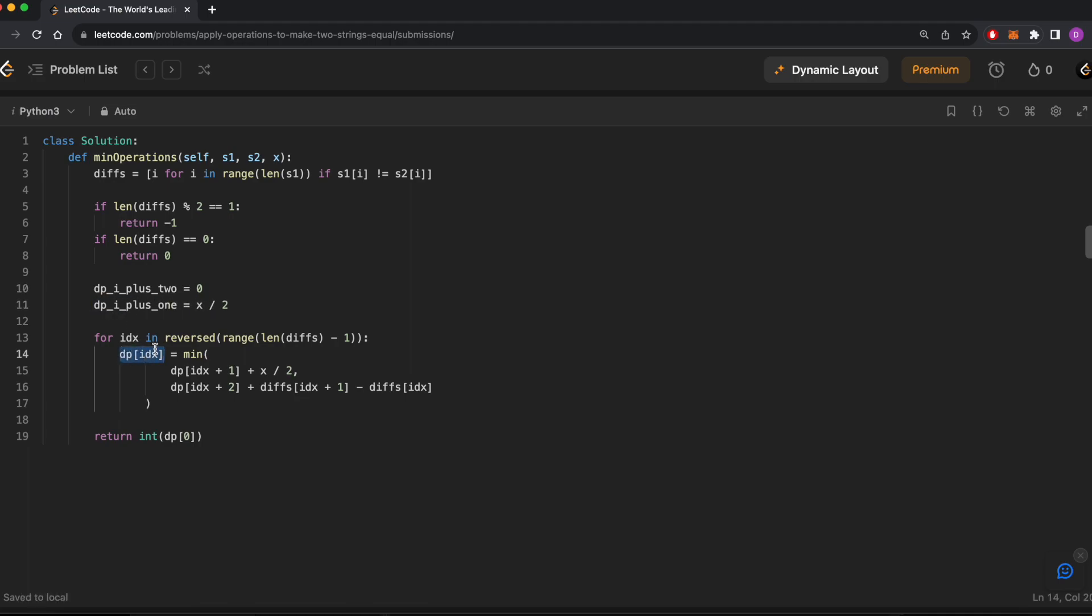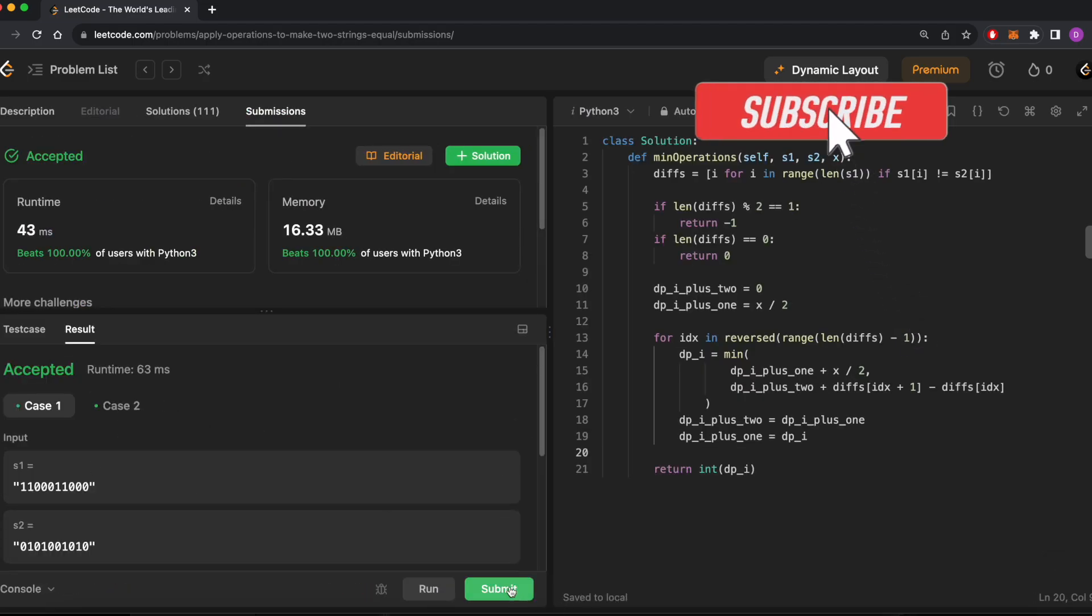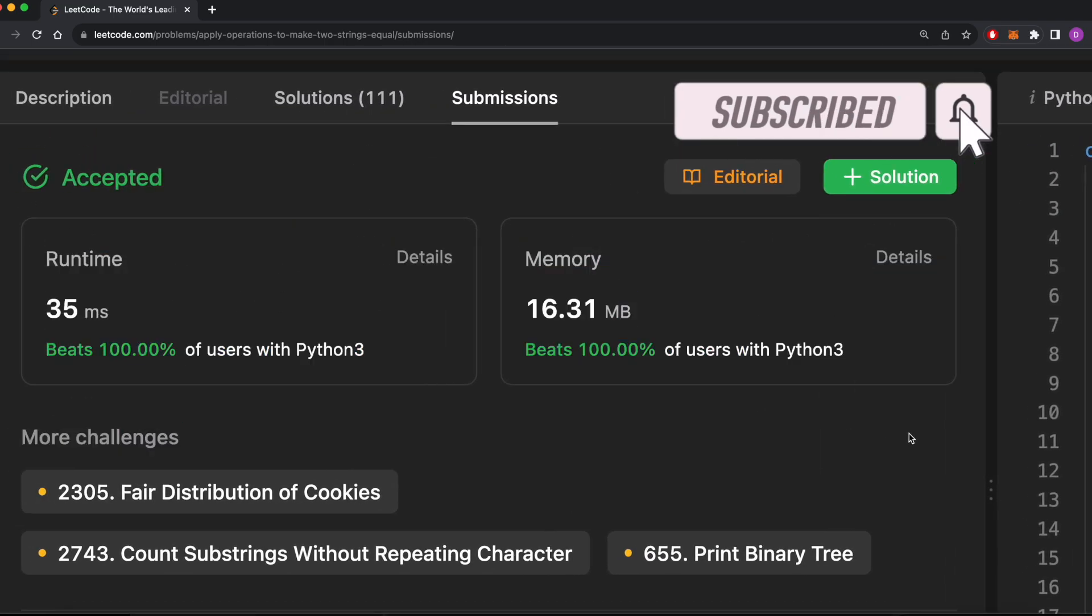Then in our iteration, we'll set dp[i] to be the minimum of dp[i+1] + x/2 and dp[i+2] + diffs[i+1] - diffs[i]. Then on the next round of iteration, dp[i+2] will be set to dp[i+1], and dp[i+1] will be set to dp[i], since we're decreasing the value of i by one. Okay, so that's how you do this problem in linear time without a dp array.